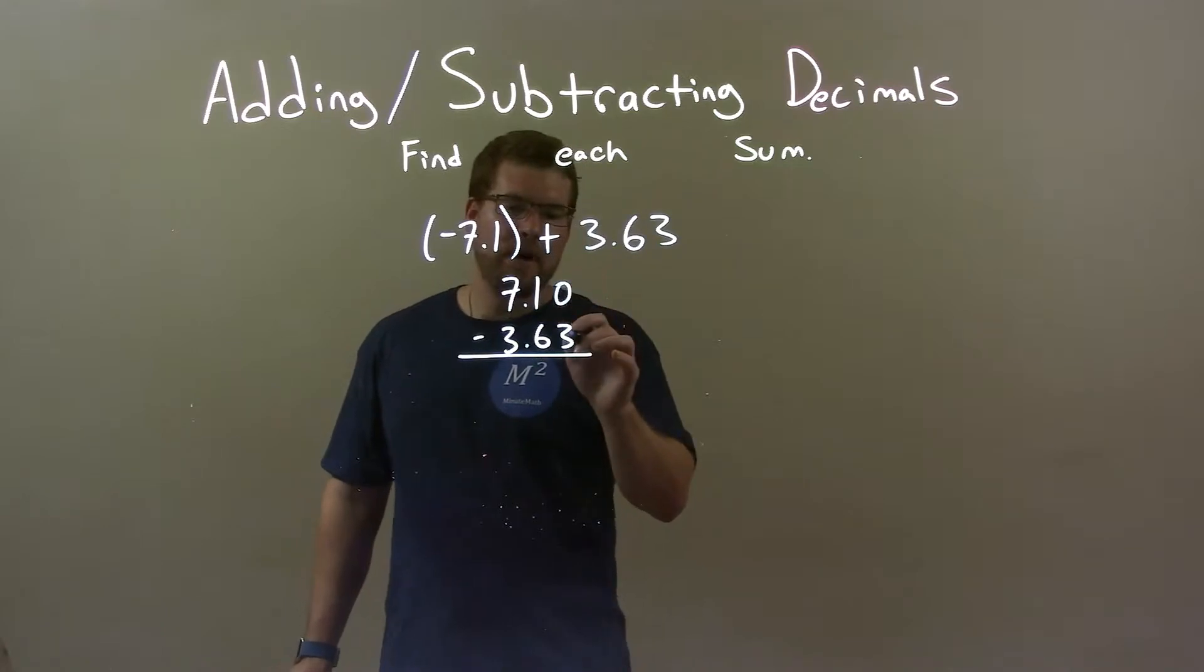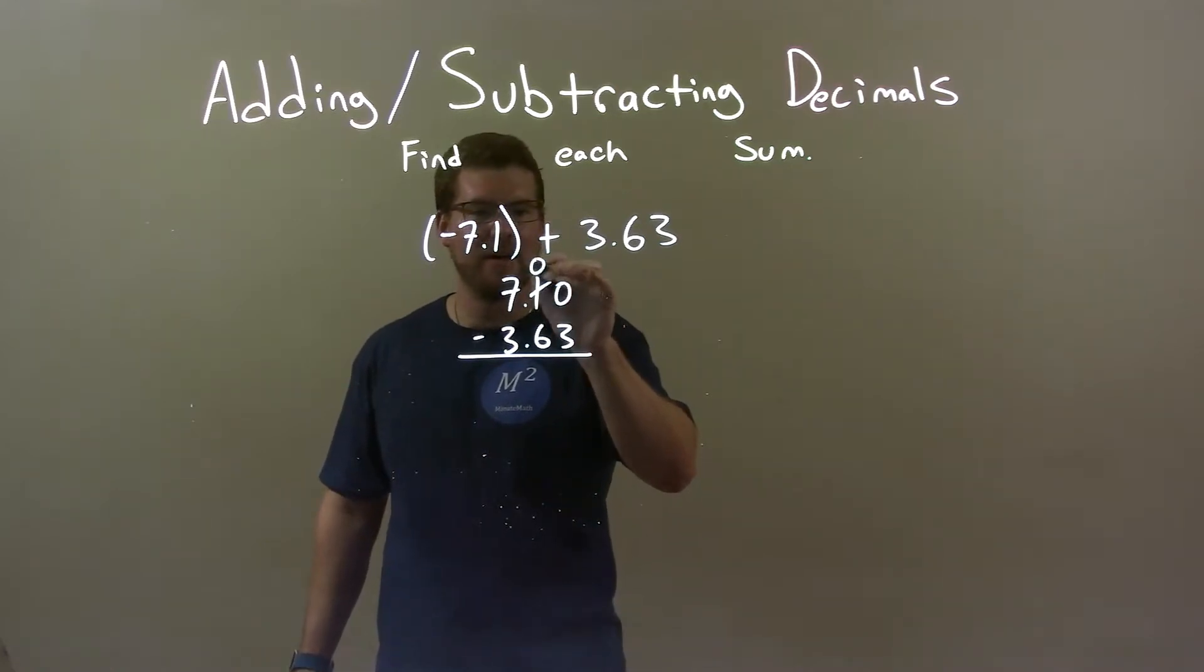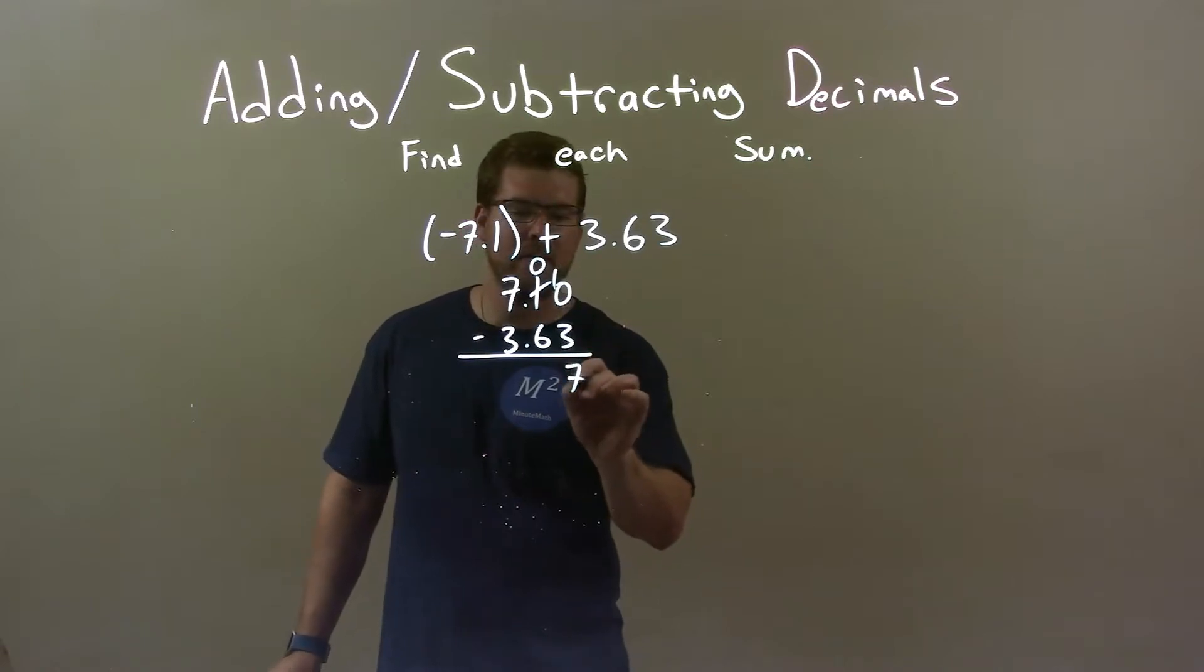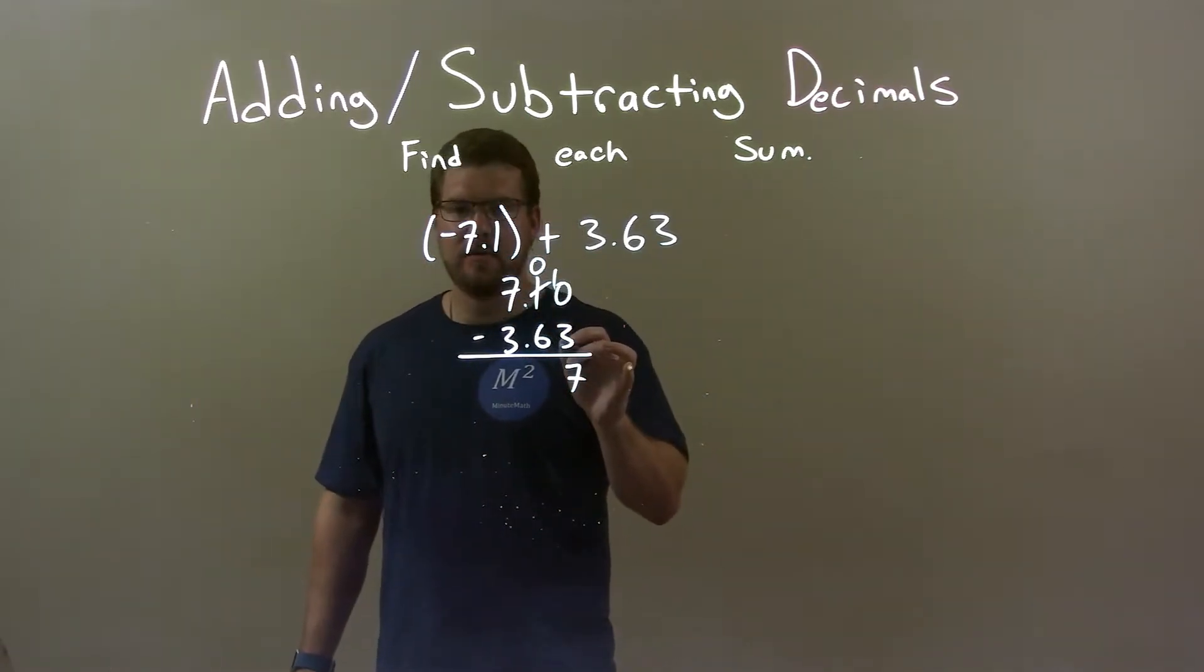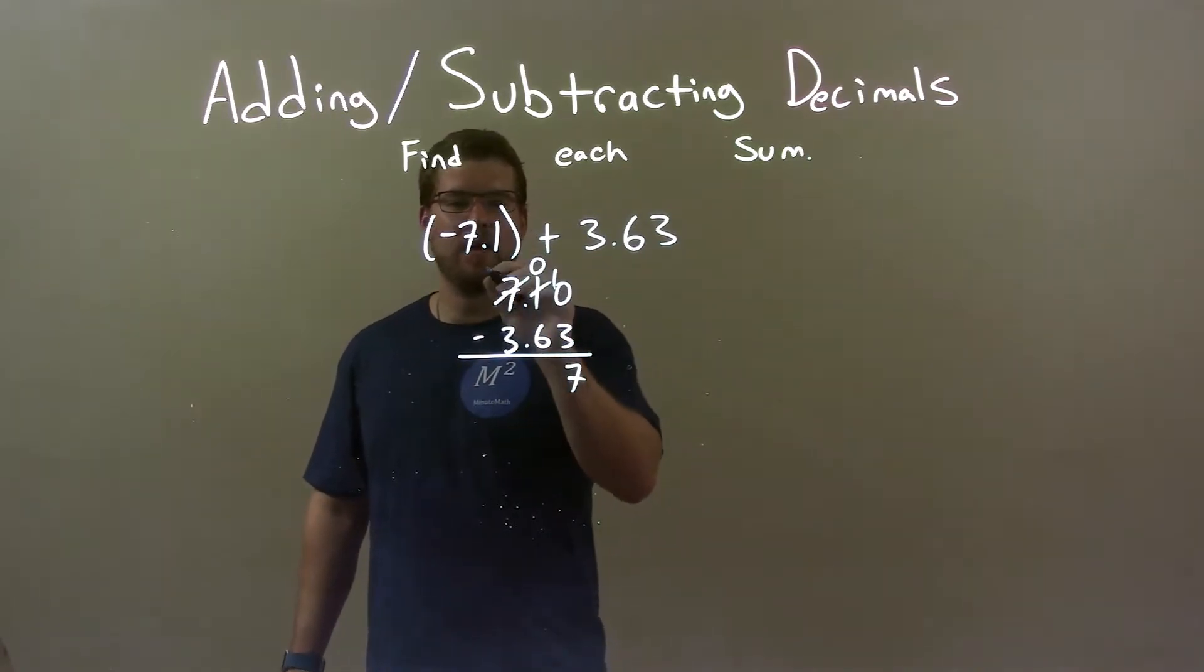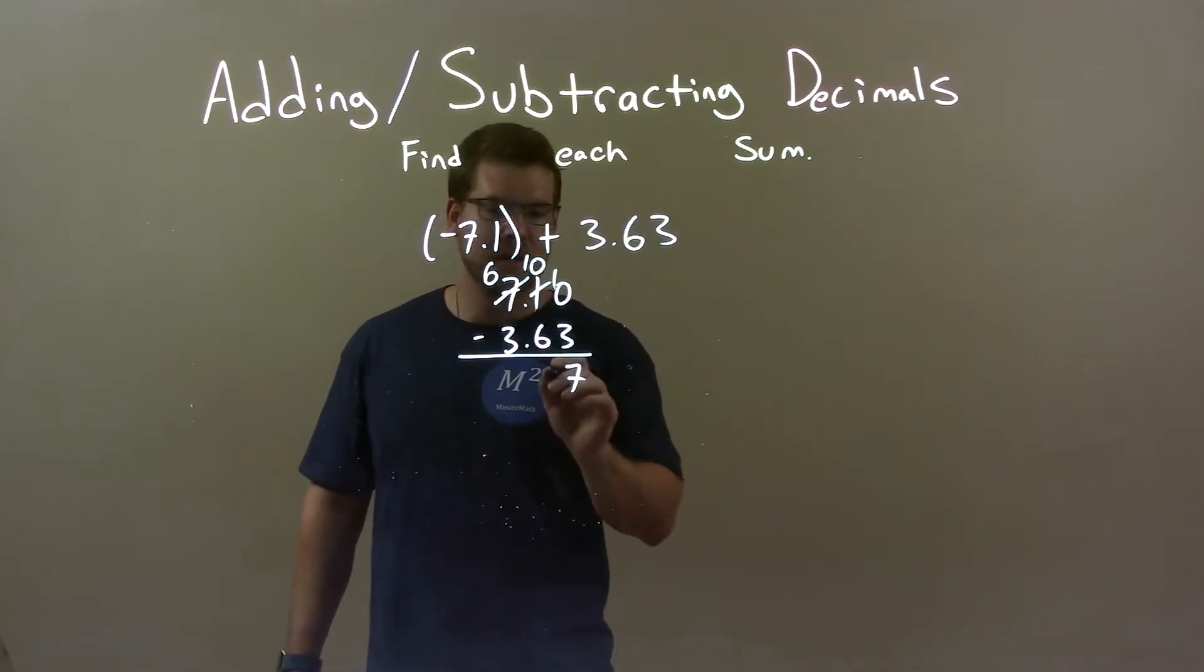So, we have zero minus three. Oh, I can't do that. We have to make that zero into a ten. So, we take the one from this one, make it a zero. Now, we have ten. Ten minus three is seven. Alright, now again, we have zero and six. Oh, I can't subtract six from zero. So, I take one from the seven, and make that a six. Now, I have a ten up there. Ten minus six is four.